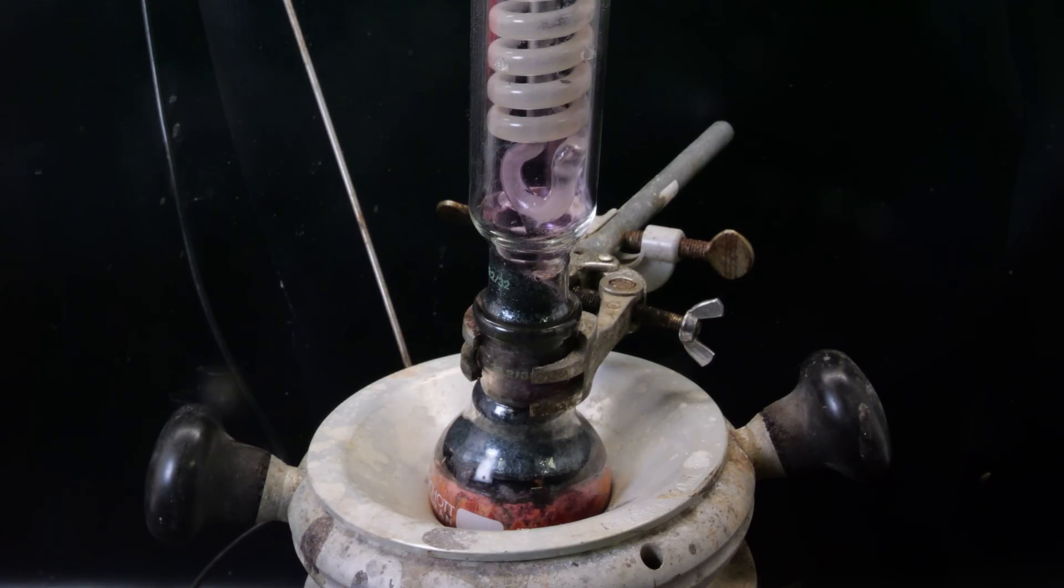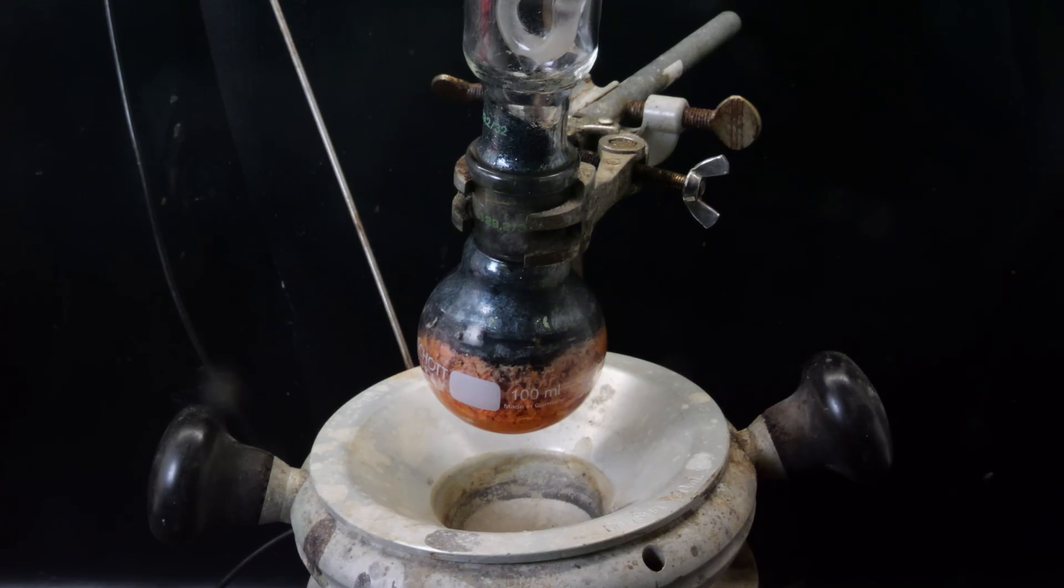When I return the next day, a bunch of orange solid can be seen. That should be the product. And the excess iodine has sublimed towards the top of the flask and into the condenser.